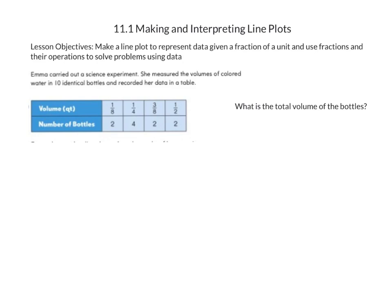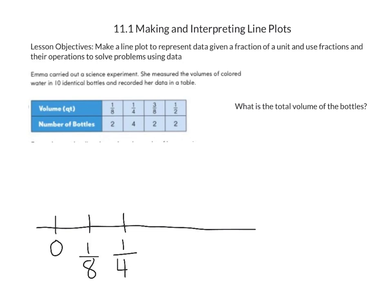To make a line plot, we're going to draw ourselves a line and then label each of our volumes. We can start with zero. For each volume, we're going to put an X vertically to represent the number of bottles. For 1/8 of a quart, there were two bottles, so we're going to draw two X's stacked vertically on top of each other.